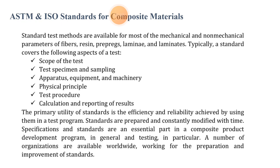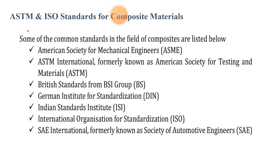Standards are prepared and constantly modified over time. Specifications and standards are essential parts of the composite products development program. A number of organizations worldwide work on the preparation and improvement of standards. Some of the common standards bodies in the field of composites include: ASME (American Society of Mechanical Engineers), ASTM International (formerly American Society for Testing and Materials), BSI (British Standards Institution), DIN (German Institute for Standardization), ISI (Indian Standards Institute), ISO (International Organization for Standardization), and SAE International (formerly Society of Automotive Engineers).